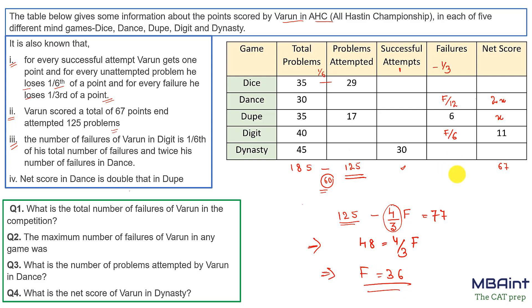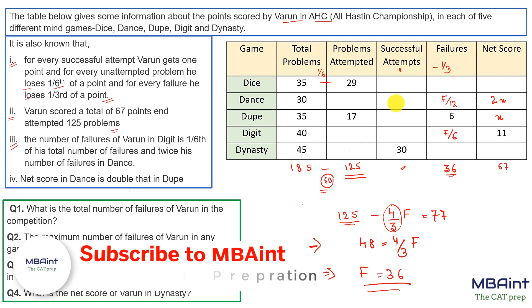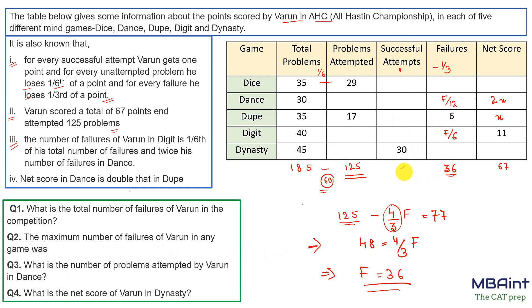Total F equals 36. Can I find the total number of successful attempts? Yes — from the 125 total attempts, subtracting 36 failures gives 89 successful attempts. Now I can get the values for dance and digit failures: F/12 = 3 (dance failures), and F/6 = 6 (digit failures). We're going ahead filling in values in the table.